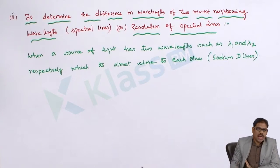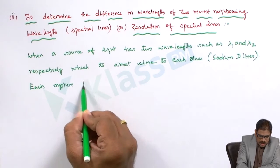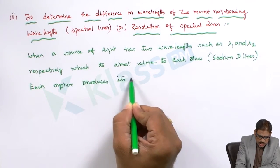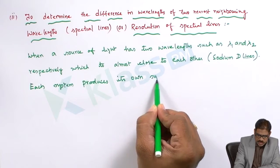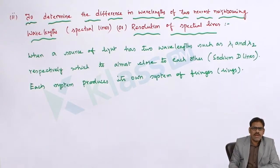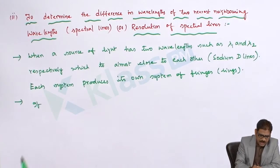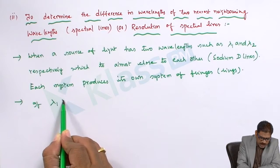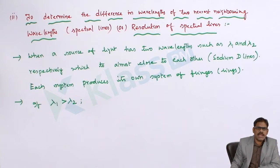Each wavelength produces its own system of fringes or rings. Now suppose lambda 1 is greater than lambda 2. That is the first condition. One of the mirrors is kept stationary, and mirror M is the one we are moving.